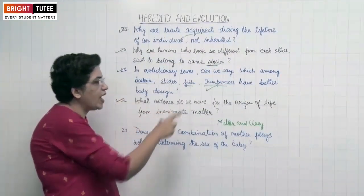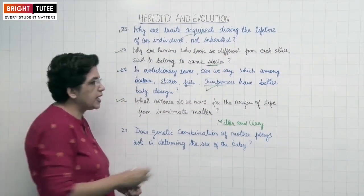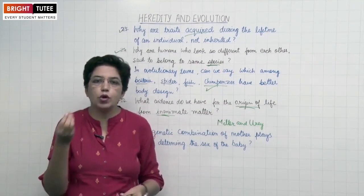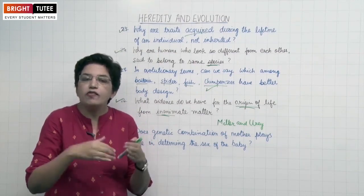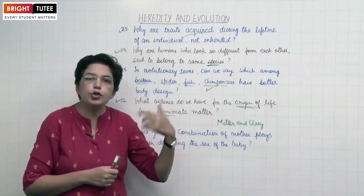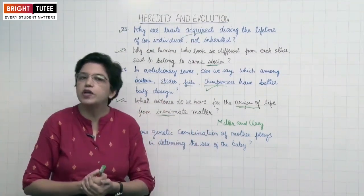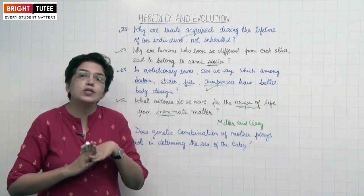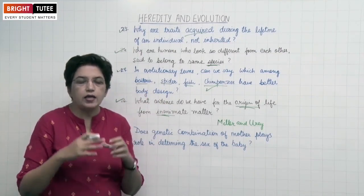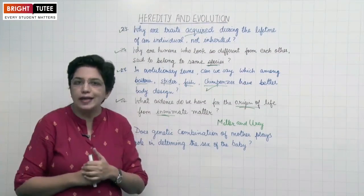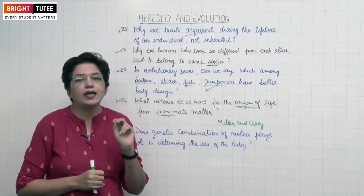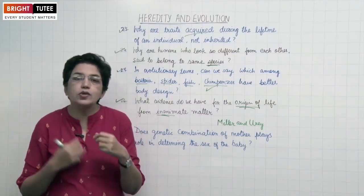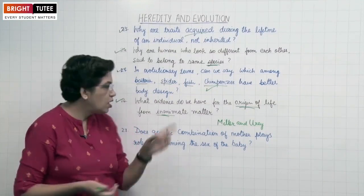Next question: What evidence do we have for the origin of life from inanimate matter? Scientists suggest life originated on earth from inanimate matter — simple carbon dioxide and water molecules combined together to give rise to complex organic matter, which then gave rise to earlier organisms, and through evolution over millions of years, present organisms were formed. An experiment was carried out by Miller and Urey, who created an atmosphere supposed to have existed on earth millions of years ago, maintaining high temperature, high pressure, and simulated lightning. It was observed that organic compounds such as amino acids and carbohydrates were formed from simple inorganic matter, giving evidence that life originated from inanimate compounds.